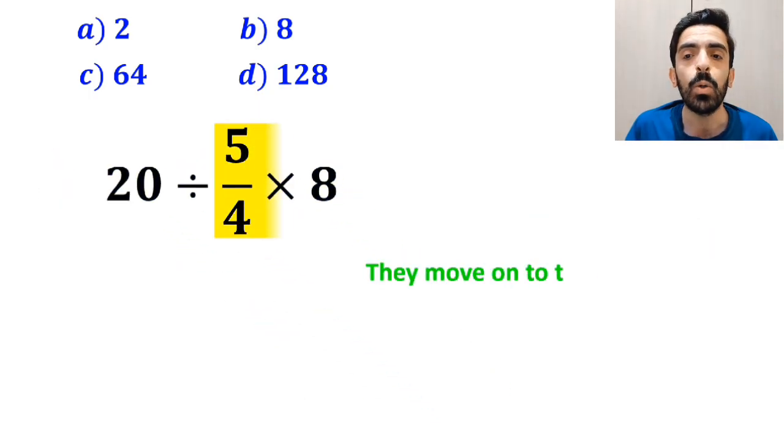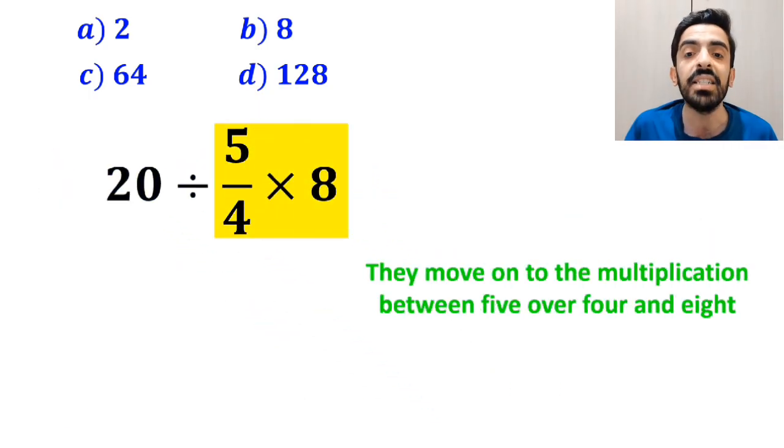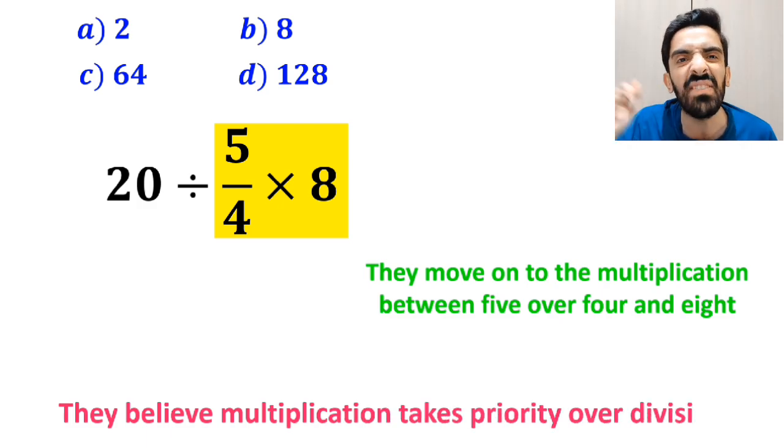Then, they move into the multiplication between 5 over 4 and 8, because they believe multiplication takes priority over division.